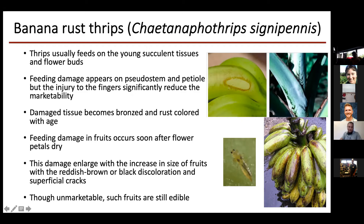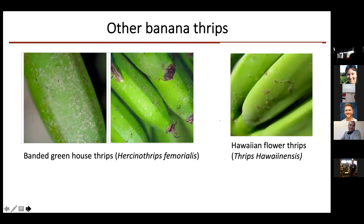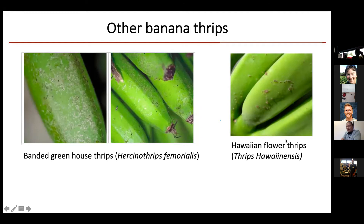There are a couple of other banana thrips. There's the banded greenhouse thrips and the Hawaiian flower thrips. Banded greenhouse thrips rasp the tissues of the fruits, causing silvering scars on the banana fruits. For Hawaiian flower thrips, you will see pimples — an abnormal growth from the tissue after they scratch or puncture the leaf tissue.